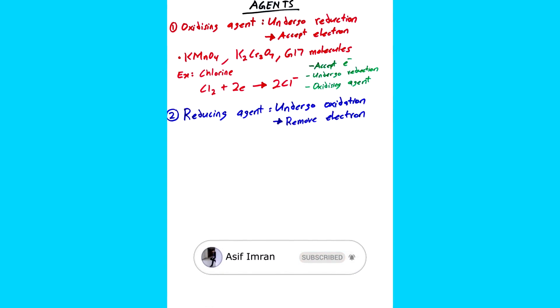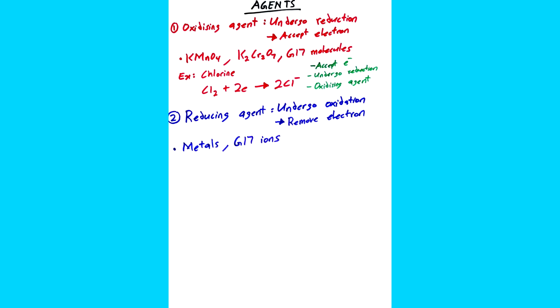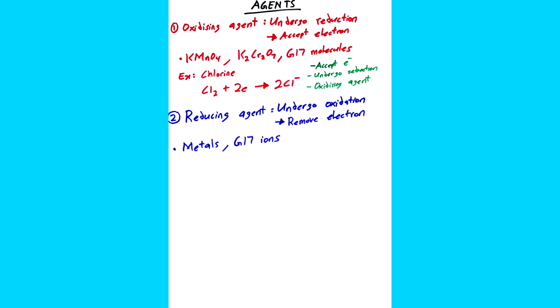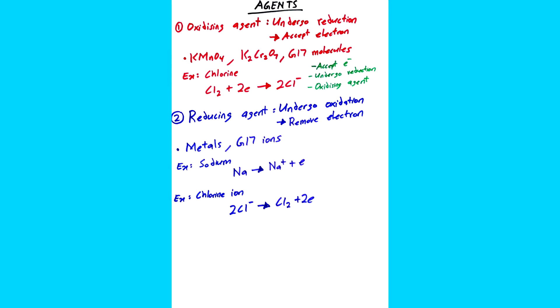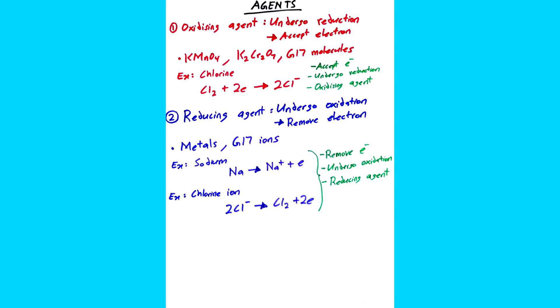Next is a reducing agent. Reducing agent undergoes oxidation by removing electrons. Examples are metals and group 17 ions. When I look at the examples from sodium and chlorine ion. Sodium releases one electron to become sodium ion and chlorine ion releases two electrons to become chlorine molecule. As you can see, both substance removed electrons and undergo oxidation. Thus, they are reducing agent.